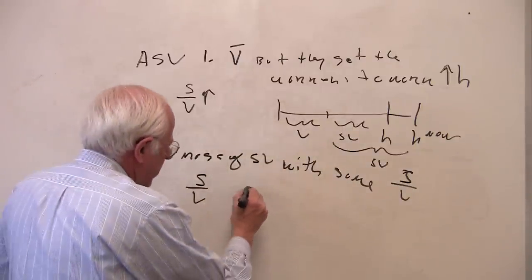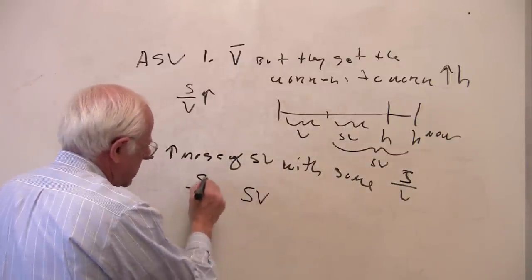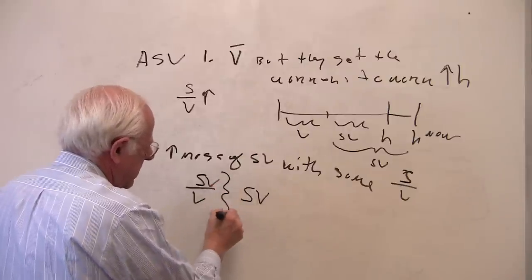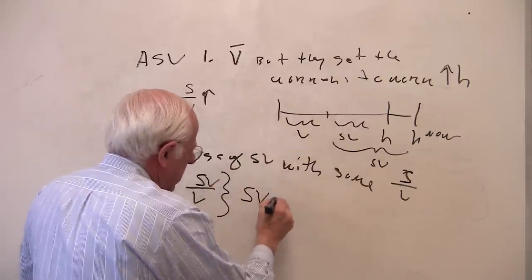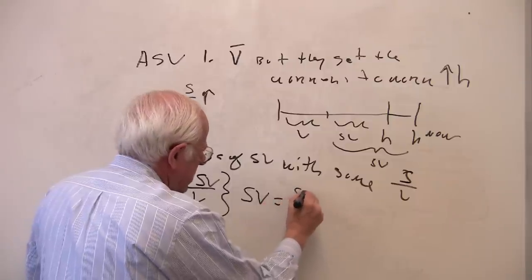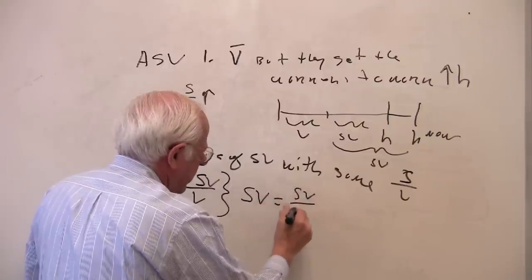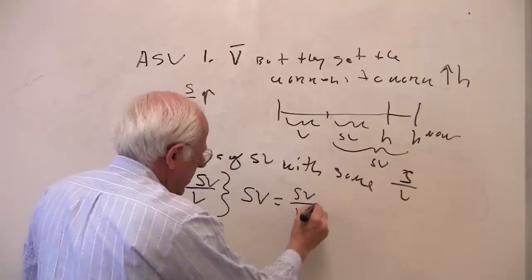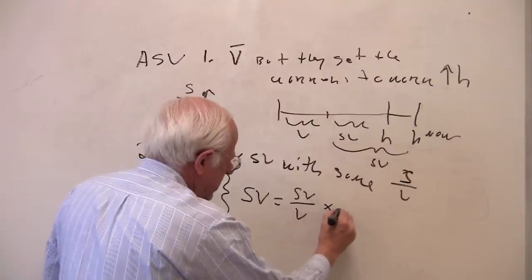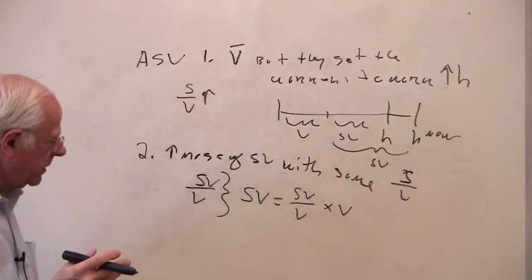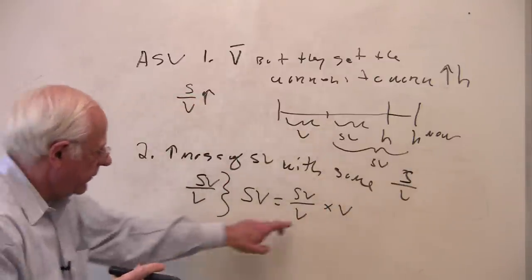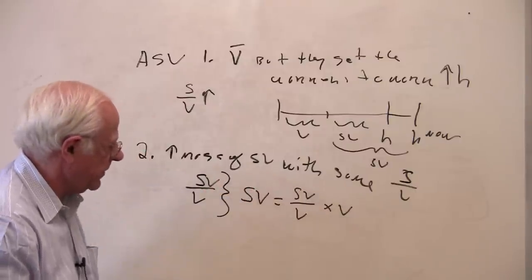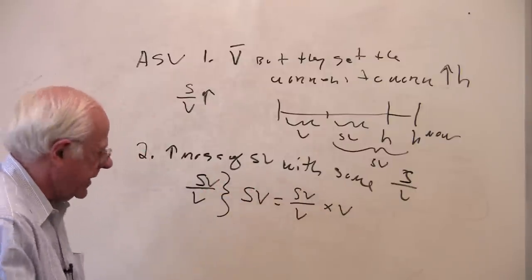So the surplus is equal to SV/V times V. I haven't done anything — V over V cancels out, so surplus equals surplus. I just want to rewrite this formula.